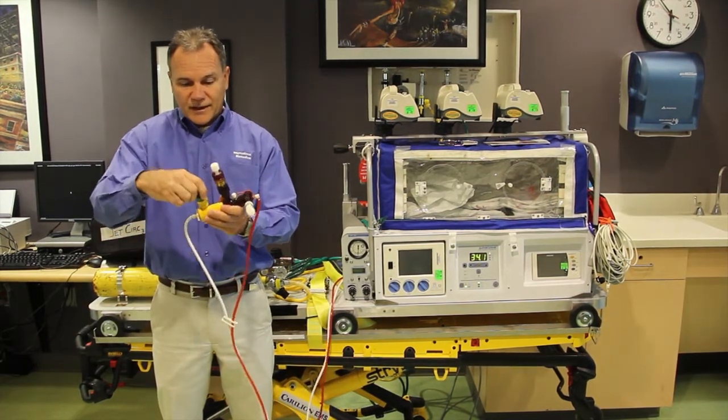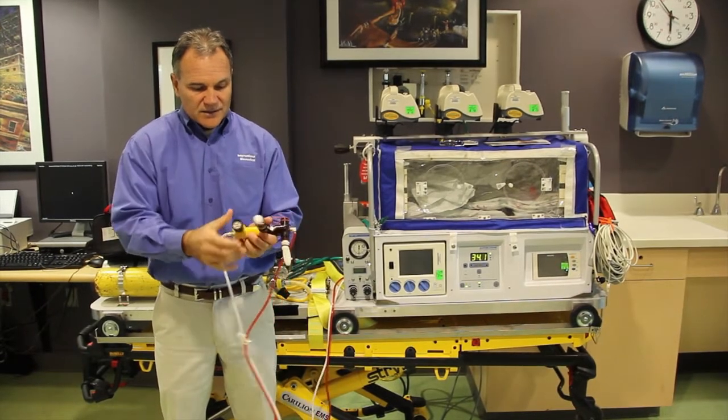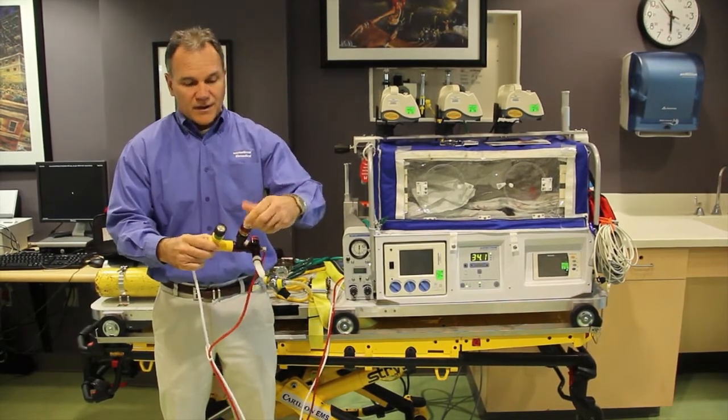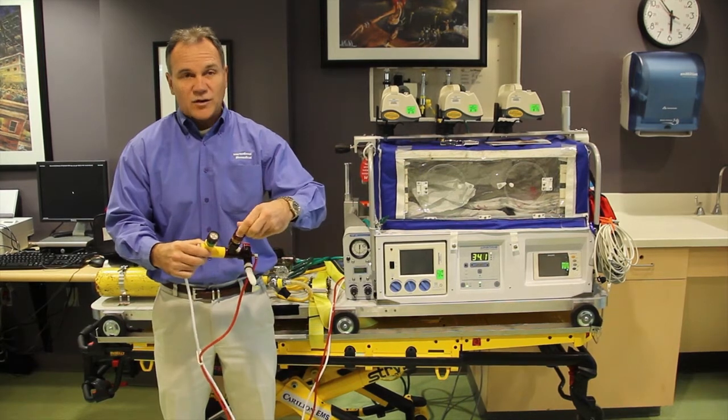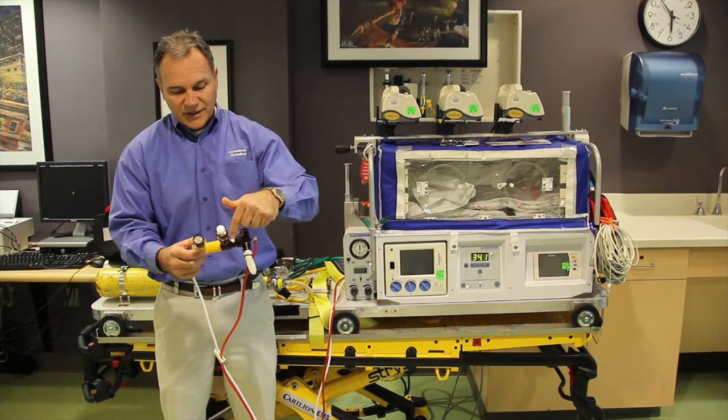On top here we have an entrainment port, and then that actually pops off. Next to that we have a peep knob, and the way that the peep knob works controls your mean airway pressure. There's a port right here for feeding in nitric oxide.